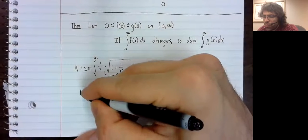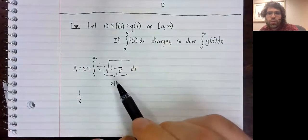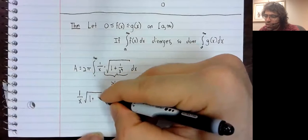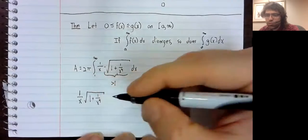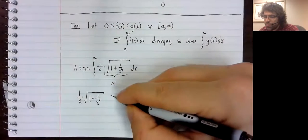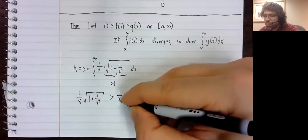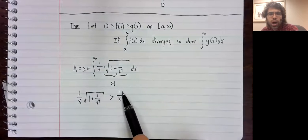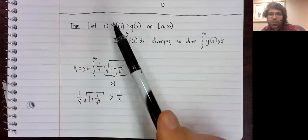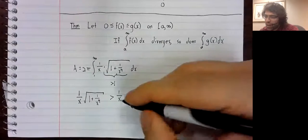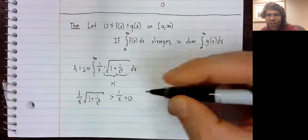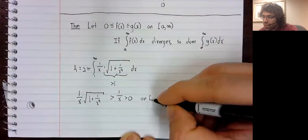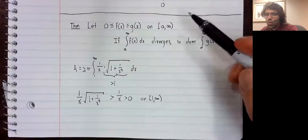Now, when you take something, one over x in this case, and you multiply it by something that's greater than one, that makes it bigger. So one over x times this square root is bigger than one over x. You can perhaps see where we're going with this. One over x is greater than zero, so we are in the situation of this theorem.